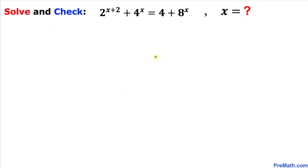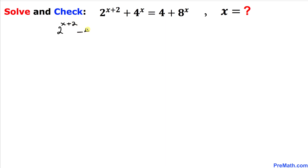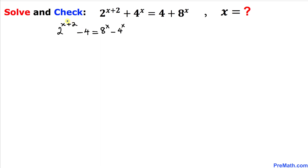So let's go ahead and get started with the solution. The very first thing we are going to do is rearrange these terms. I'm going to move this term to the right and similarly move this term to the left. So our equation is going to look like 2 power x plus 2 minus 4 equals to 8 power x minus 4 power x.